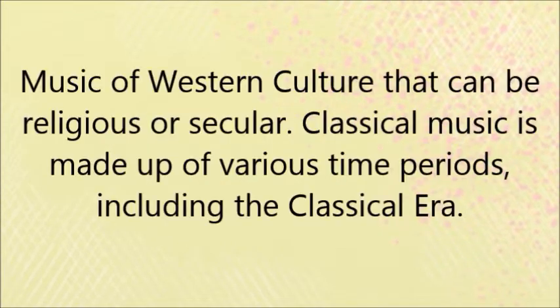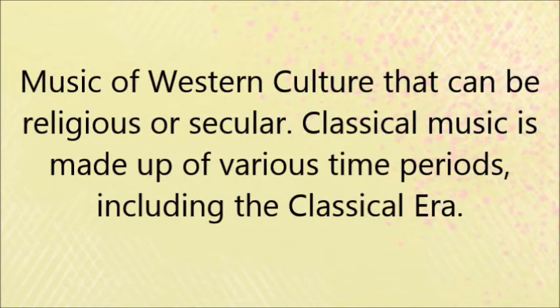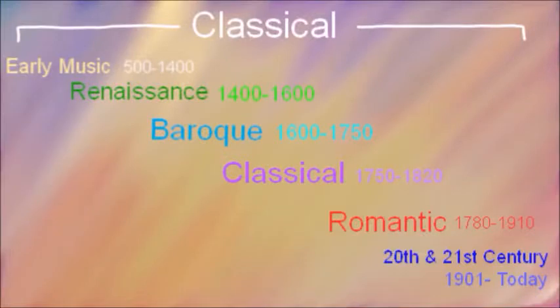Classical music: music of Western culture that can be religious or secular. Classical music is made up of various time periods, including the Classical era. Technically, the term 'classical' refers to music from 500 AD all the way until today. However, we also have various periods with distinct characteristics. These eras include early music, Renaissance, Baroque, Classical, Romantic, and 20th and 21st century.